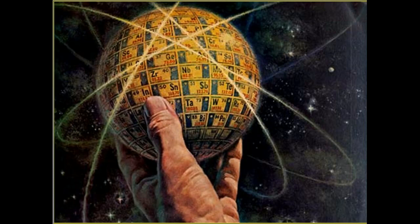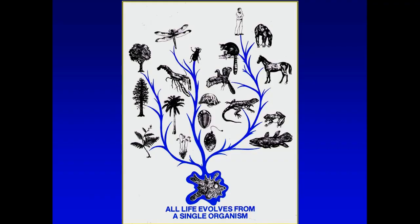For somebody to say that it's proven is not scientifically valid. It has not been proven in any way, shape, or form. People can theorize all they want, but they have never seen it happen and they will never see it happen. Once you get life, if you want to believe the general theory and go from single cell to all the things that exist today, you have a right to do that, but there are a lot of problems with that. We're going to talk more about that tonight as we go through the fossil record.